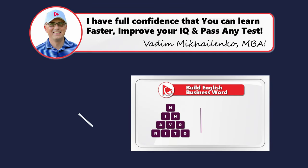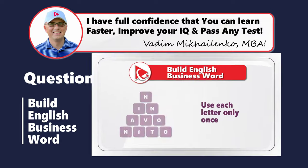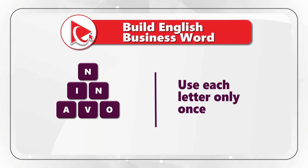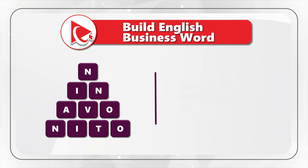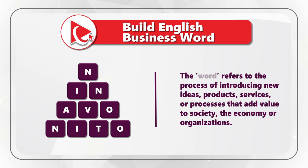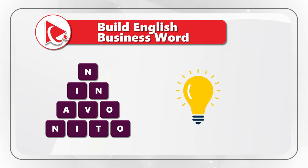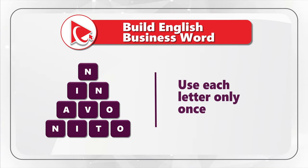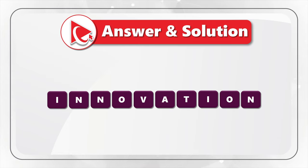I love this question because the answer represents such a powerful business concept. You're presented with 10 letters, and you need to build an English business word by using each letter only once. The letters are N-I-N-A-V-O-N-I-T-O. The word refers to the process of introducing new ideas, products, services, or processes that add value to society, the economy, or organizations. My answer is 'innovation,' spelled I-N-N-O-V-A-T-I-O-N.